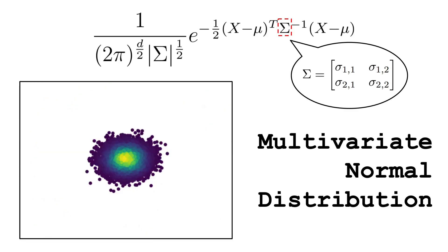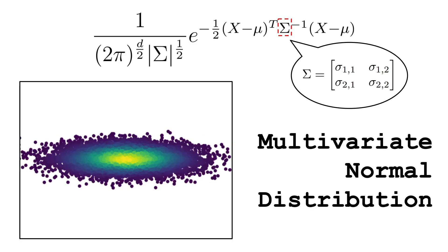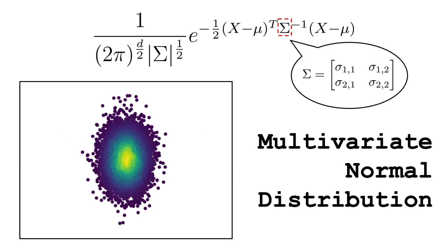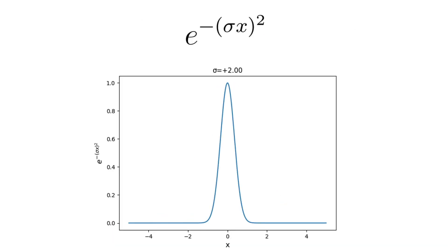If you remember from the previous video, in the 1D case, sigma, which is the standard deviation and is equal to the square root of the variance, controlled the spread of the distribution. The higher it was, the wider the spread became, meaning that the data points were more dispersed around the mean.